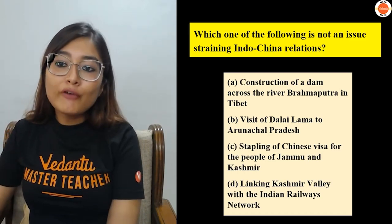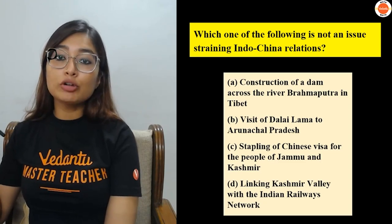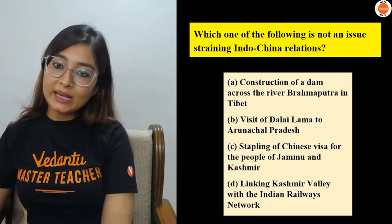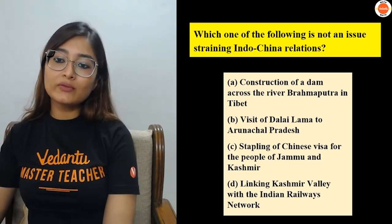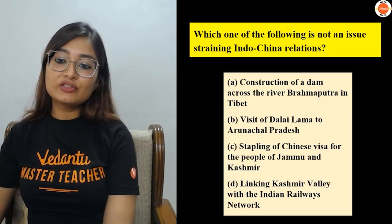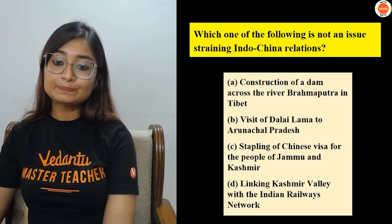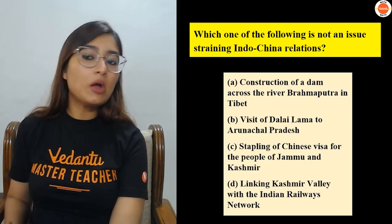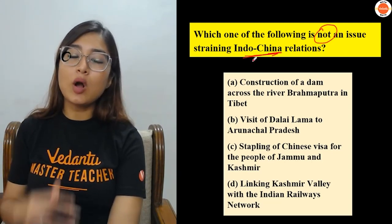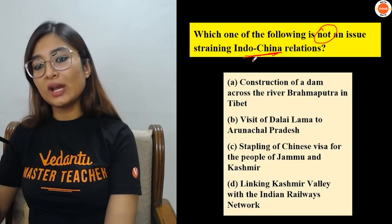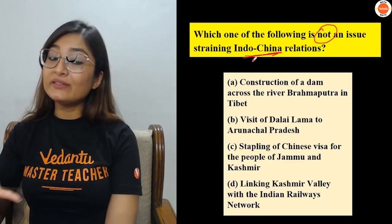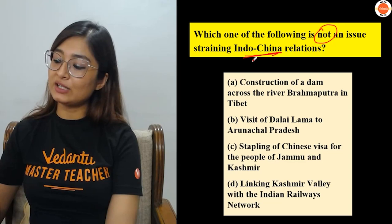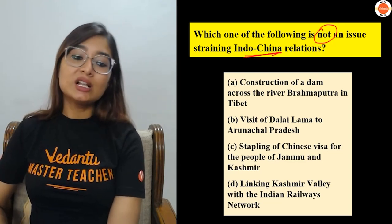Final question: Which of the following is NOT an issue straining India-China relations? Options: River Brahmaputra dam on Tibet, visit of Dalai Lama to Arunachal Pradesh, stapling of Chinese visas for people of Jammu and Kashmir, or linking the Kashmir Valley with the Indian railways network. Think about which one is NOT a problem hampering India-China relations — three options are reasons for tension, one is not.